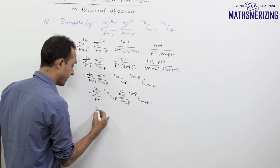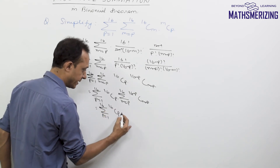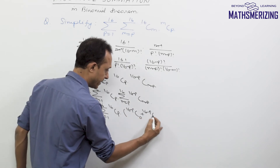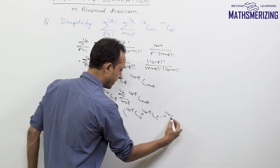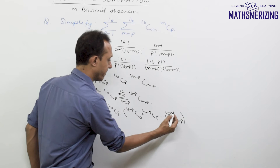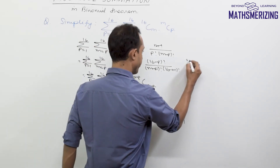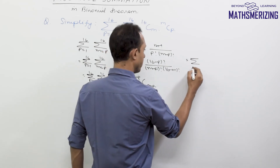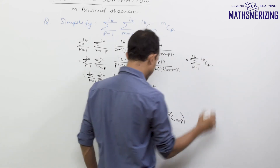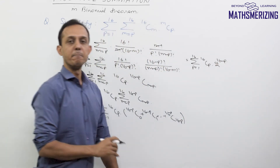So I can write it as summation p varies from 1 to 16 of 16Cp, and then the summation where m varies from p to 16 of (16 minus p) C (m minus p). This series is in fact nothing but summation p varies from 1 to 16 of 16Cp times 2 to the power (16 minus p).